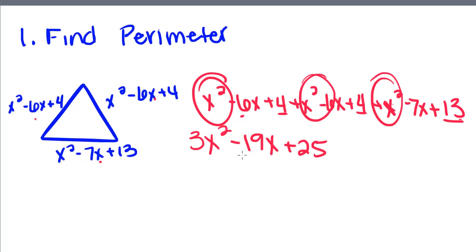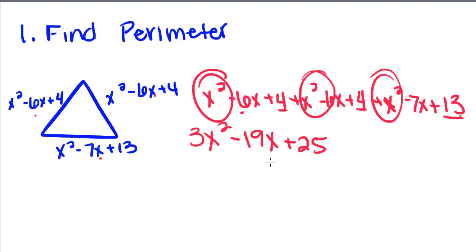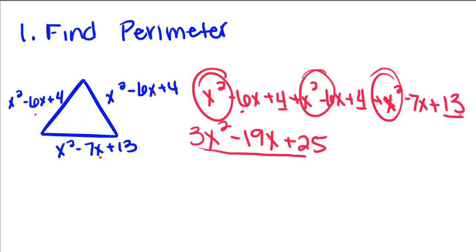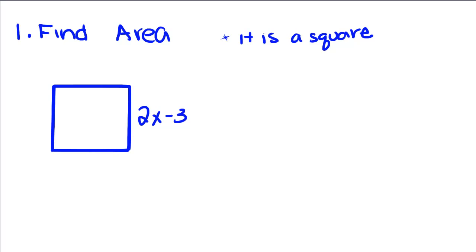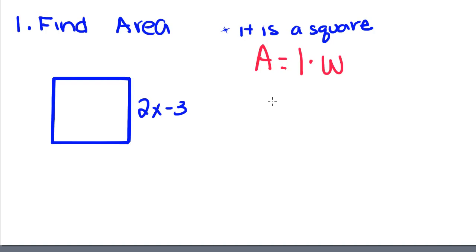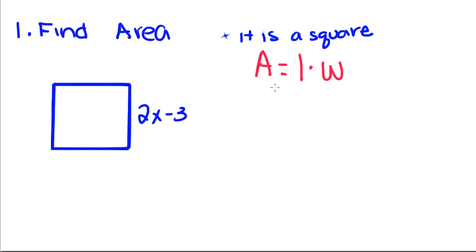Once again, this polynomial — 3x² - 19x + 25 — expresses the perimeter of this shape in terms of x. Now we're going to do the same thing but with area. The formula for area of a rectangle is length times width. This note here tells us it is a square, so we can use the area formula side squared.